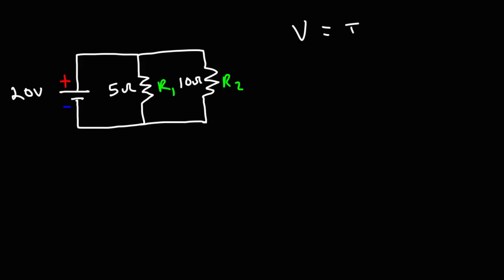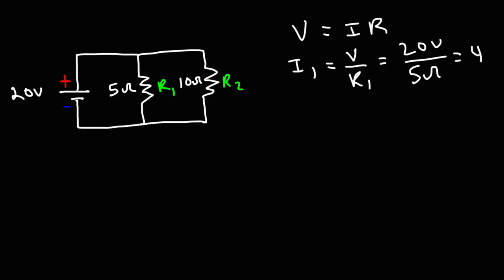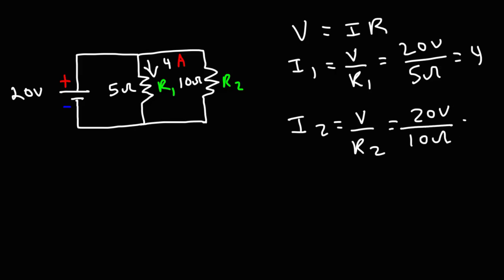We can use Ohm's law to calculate the current flowing through each resistor. To calculate I1, it's the voltage across it divided by R1: 20 volts divided by 5 ohms, which is 4 amps. To calculate I2, it's 20 volts divided by 10 ohms, which is 2 amps. The current leaving the battery is the sum of these two, so the battery is delivering 6 amps to the circuit.